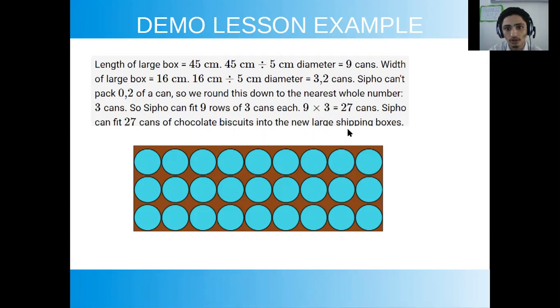So there is a picture, a scaled picture of how it looks and what you can see is you count 1, 2, 3, 4, 5, 6, 7, 8, 9 across and 1, 2, 3 down. That is the measurement of the width and that is the measurement of the length and what you can see is that they are dividing the length by the diameter to see how many cans can fit into the length of the box.